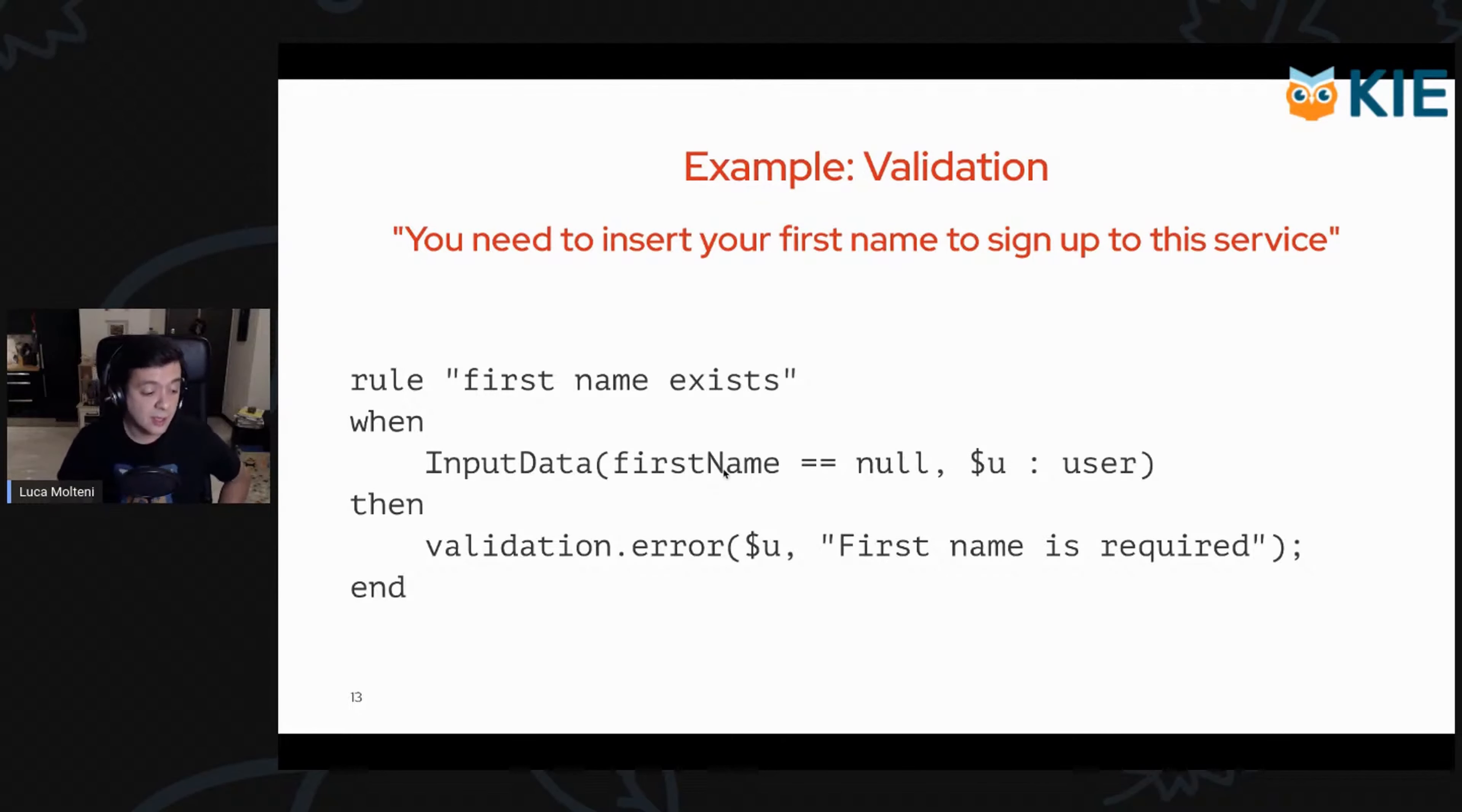The first thing is a condition that checks if the first name is null. The second is a binding that binds a field of the input data to this variable called $U, which we're going to use in the consequence. The consequence, as I've told before, is the part in the then part, what happens when the rule will fire.